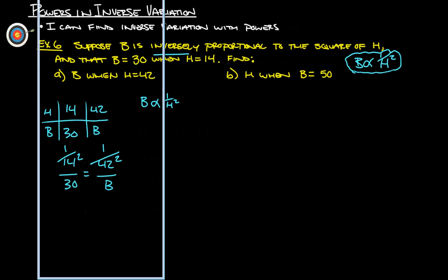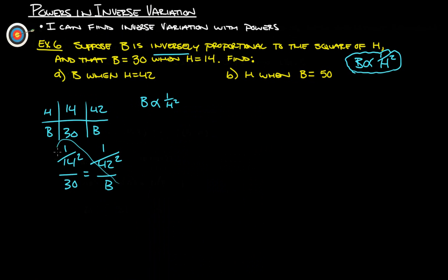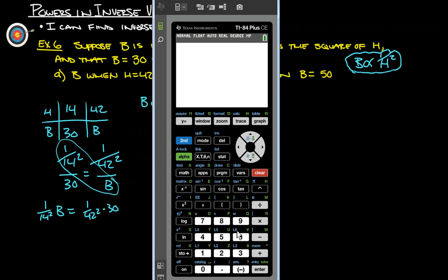So really, we're just going to get our calculator out here. We've got 1 over 14 squared times B. B is going to equal 1 over 42 squared times 30. So let's figure out what 1 over 42 squared times 30 is. That's really just going to be 30 divided by 42 squared. 30 divided by 42 squared gives us 0.01700.